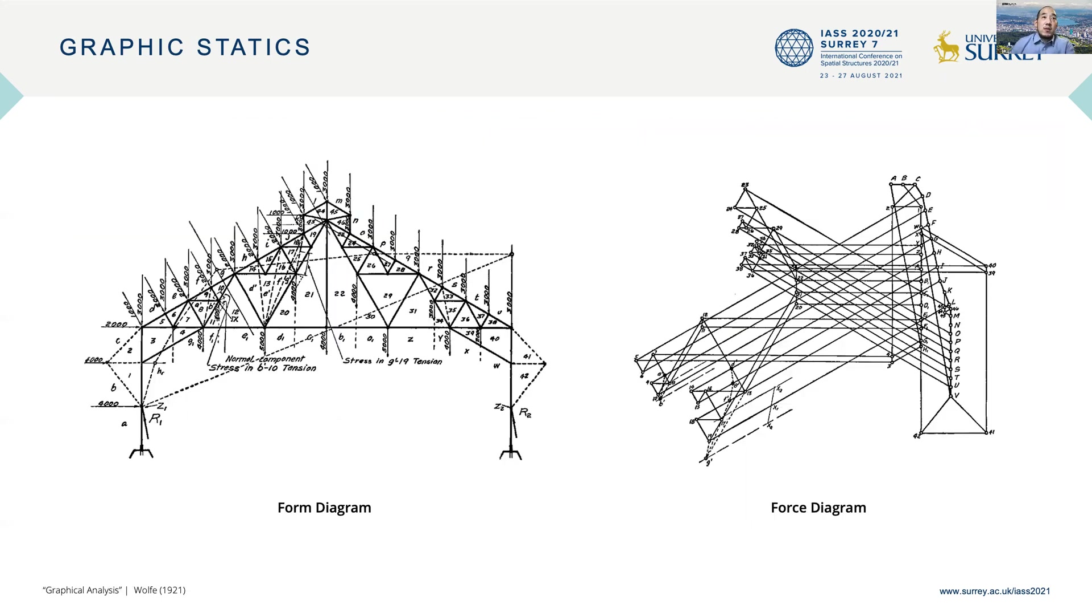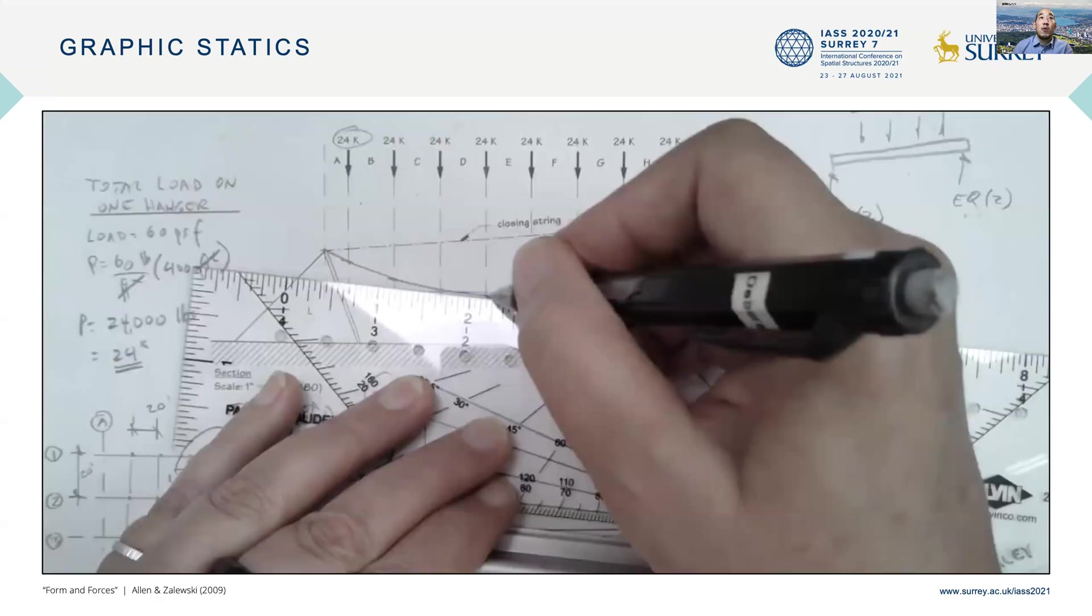But practical limits of graphic statics were quickly evident. As structures start to become more complex, the form and force diagrams start to become complex as well. Before the time of computers, drawing such complex diagrams by hand became very quickly tedious and time-consuming, so a lot of structural engineers throughout the 20th century stopped using this method in favor of more computational analytical methods.